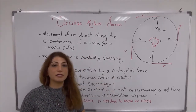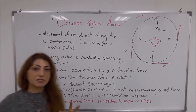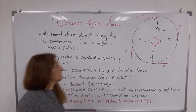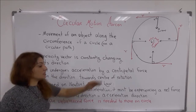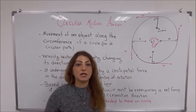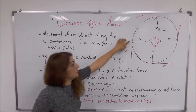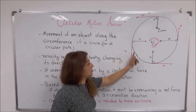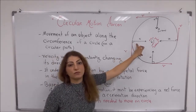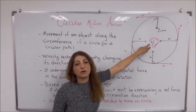To summarize: the movement of objects along the circumference of a circle is called circular motion. The velocity vector is always constantly changing its direction — up, down, right, and left. As you can see, the velocity is moving along a tangent of the circle. There is also an acceleration, and its direction is towards the center of the circle.